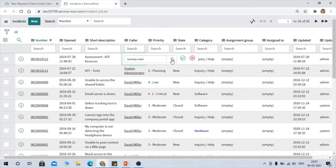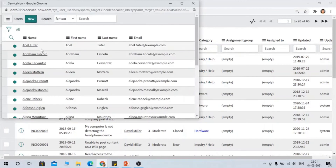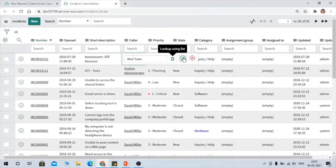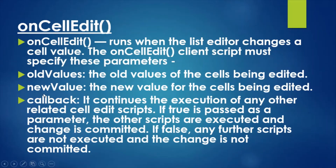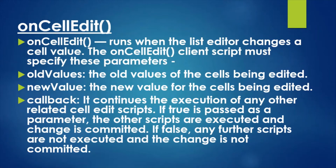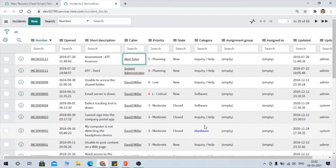For example, changing from 'Survey User' to 'Abel Tuter' — 'Survey User' is the old value and 'Abel Tuter' is the new value. The callback parameter continues the execution of any other related cell edit script. If true is passed as the callback, other scripts are executed and the change is committed. If false is passed, other scripts are not executed and the change will not be committed.